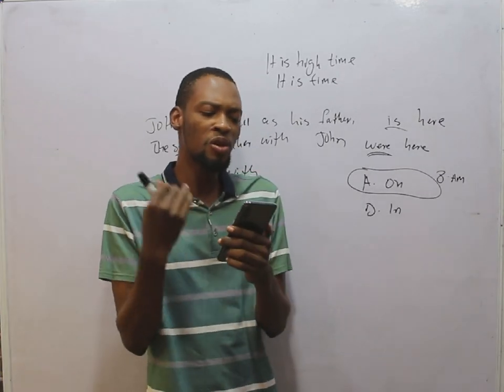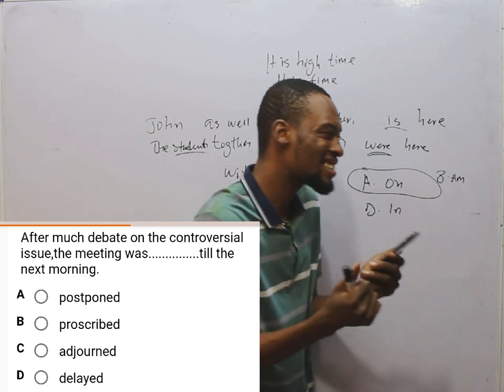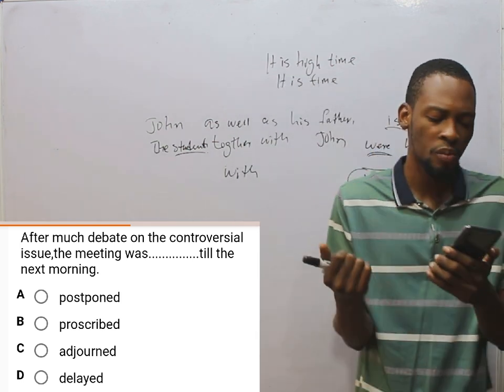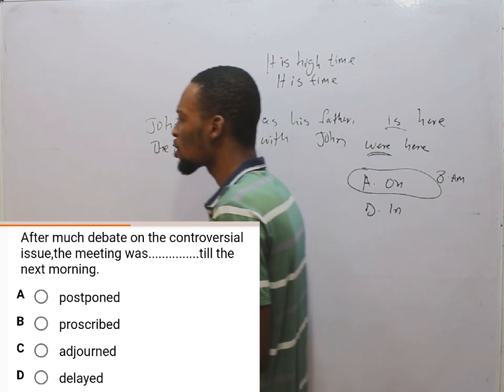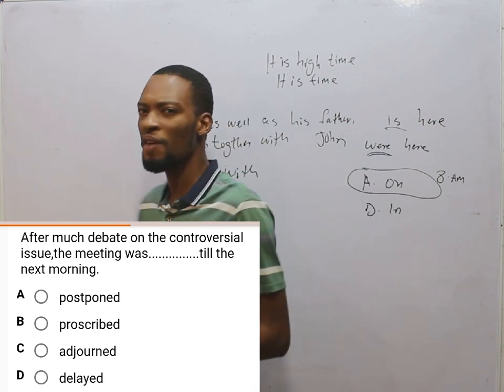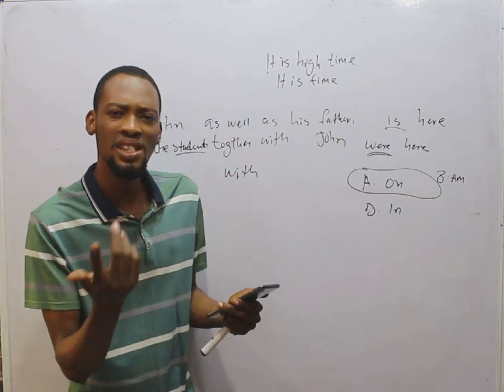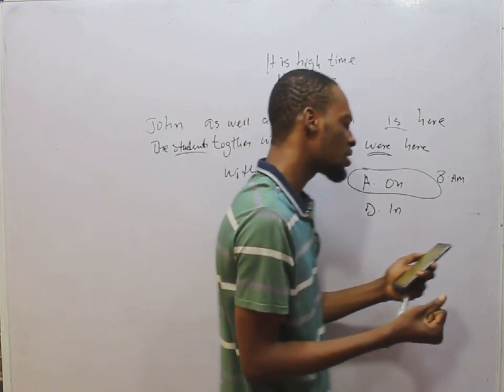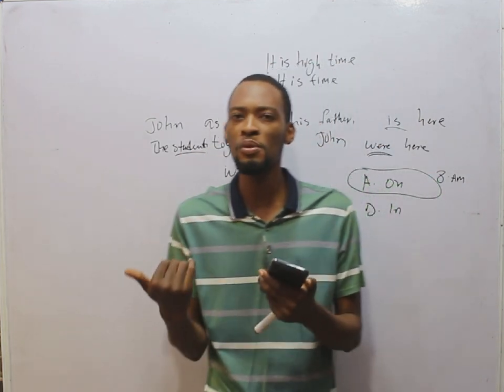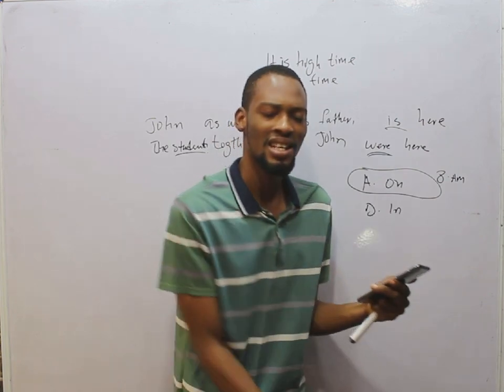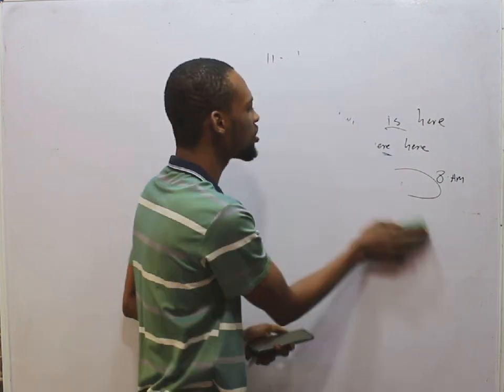After much debate on the controversial issue, the meeting was dash dash till the next morning. This simply means the meeting was postponed till the next morning. But this question still obeys register. When it comes to a meeting, the word associated with postpone is adjourned. You don't say the meeting was postponed — you say the meeting has been adjourned. So we say adjourned, because it relates to meetings and adjourned is the most appropriate word.